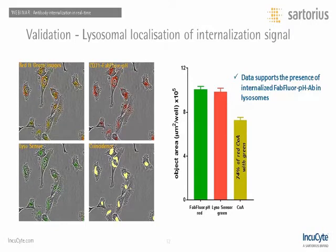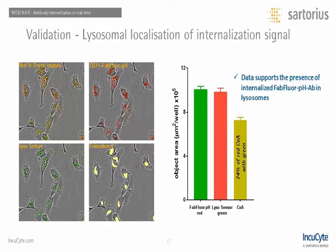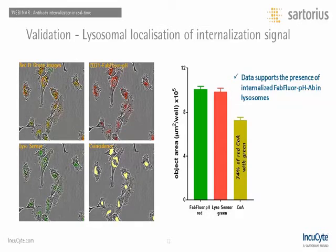The final validation data demonstrates that the antibody internalization signal is localized within the lysosomal compartment. HT1080 cells treated with CD71 show the red antibody internalization signal. Adding LysoSensor, a lysosomal marker producing a green signal, and using the Incucyte software to assess the coincidence of both markers, the yellow marking shows co-localization. Quantification reveals that approximately 74% of the red area is co-localized with the green area, supporting that the internalized FabFluor reagent is within the lysosomal compartment.